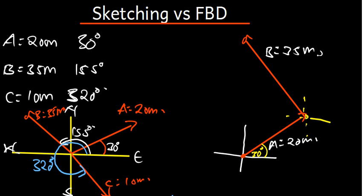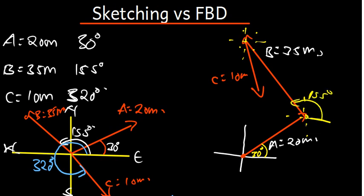From the destination of vector B, I make another small XY prime. I know this is the fourth quadrant, and vector C is found in the fourth quadrant. Vector C is 10 meters — it's supposed to be a bit shorter than vector A. I draw it there and label it vector C, which is 10 meters. From this line to that line is 155 degrees for vector B, and from this line to that line is 320 degrees for vector C.